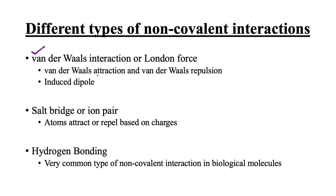We will discuss Van der Waals attraction or Van der Waals repulsion. We will also talk about induced dipole, as it is a very important concept to understand these different types of electrostatic interactions. We will also discuss salt-bridge or ion pair — you know that atoms either attract or repel each other based on the charges they carry. And finally, we will talk about hydrogen bonding, which is a very common type of non-covalent interaction in biological molecules.